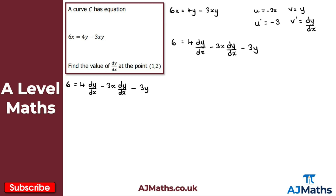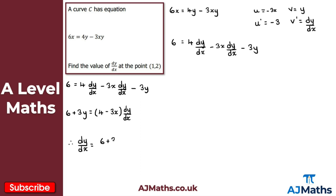To make dy by dx the subject, we add 3y to both sides to get 6 plus 3y. Then factoring out dy by dx on the right gives (4 minus 3x) times dy by dx. Dividing both sides by (4 minus 3x), dy by dx equals (6 plus 3y) all divided by (4 minus 3x).